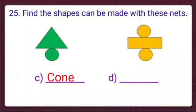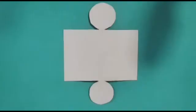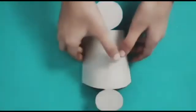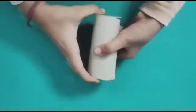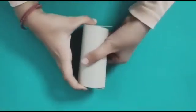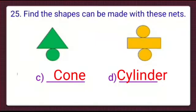In part D, we can see two circles and a rectangle in between them. Again, we are using a paper net here. Let's fold it carefully. This is a 3D shape — that of a cylinder. Cylinder is the folded shape we get from this net.